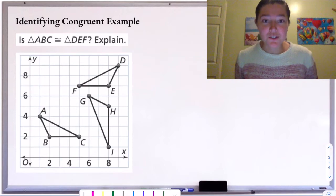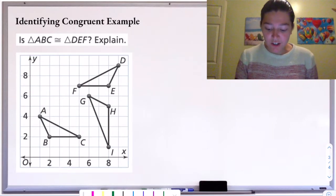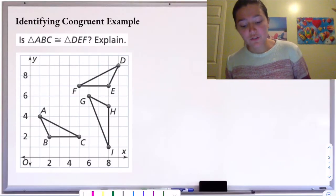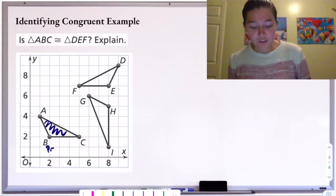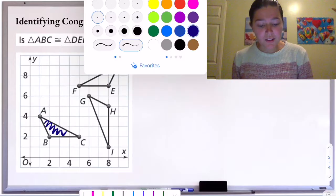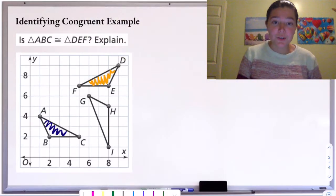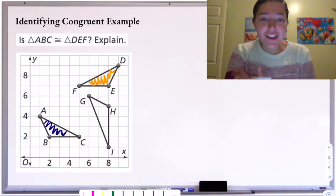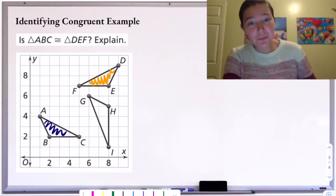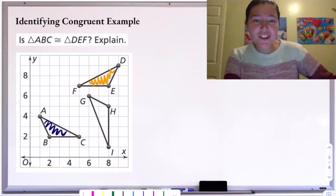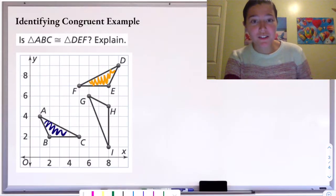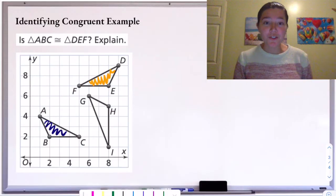Now let's try to identify congruent figures. We have triangles ABC, DEF, and GHI on this graph. The question is: is triangle ABC congruent to triangle DEF? Looking at them, they appear to have the same angles and the same side lengths — the same size and the same shape. To prove that two shapes are congruent, we need to show there exists a sequence of transformations that will take one to the other.